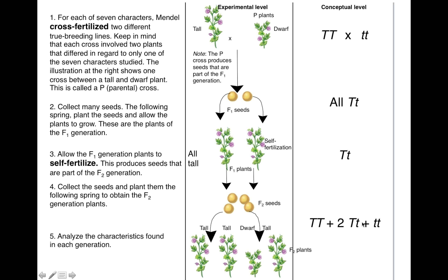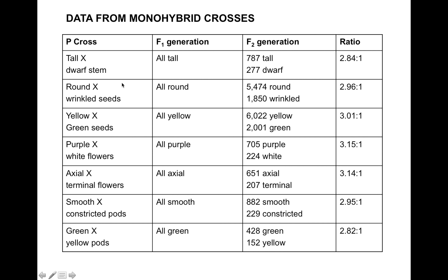This is what we know about how to designate the genotypes for these different plants. Our true breeding tall plants are going to have two dominant alleles, and our true breeding short plants are going to have two recessive alleles. When we cross-fertilize these together, you end up with an F1 generation that has the genotype of a dominant allele plus a recessive allele, but it's exhibiting the dominant phenotype. And when you self-fertilize these, you can end up with various combinations: two dominant alleles, a dominant and a recessive, or two recessive alleles.